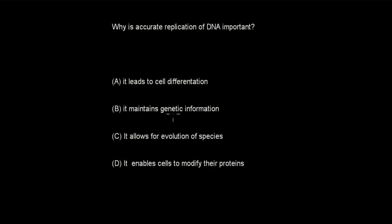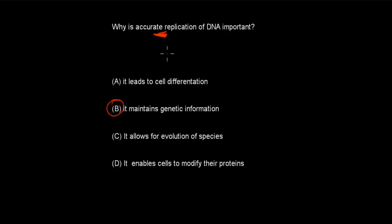Welcome back. The correct answer is B. Accurate replication means our DNA won't differ from the original, so we won't have random mutations that might cause problems. Accurate replication means our genetic information stays the same, which is what B tells us. Cell differentiation is quite random and has nothing to do with DNA replication, so A is false. The other options are also wrong.